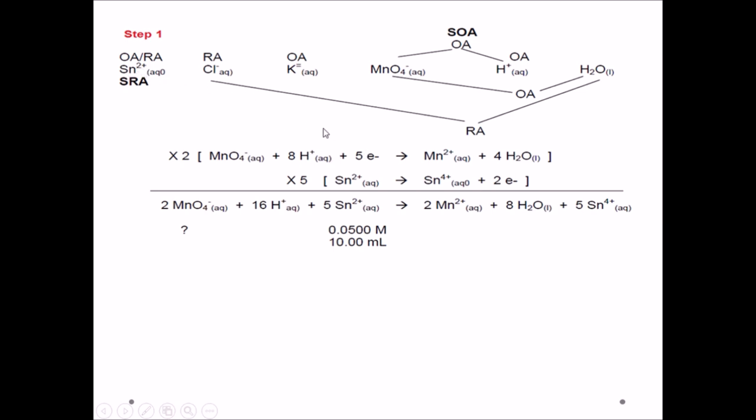We have to write both half-reactions from the data booklet. Note how the electrons in both half-reactions are not the same. Therefore, we have to multiply the first half-reaction by 2 and the second half-reaction by 5. This will cancel out the electrons on either side of the equation when we add both half-reactions together to get the redox reaction.